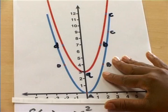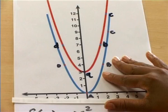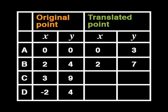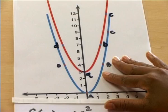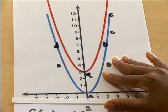And let's see what the new coordinates of those points are. Taborho, please record the new coordinates in your table as Cindy reads them off the graph. I've moved the transparency. And now, point A, which is zero and zero, is now zero and three. Point B, which is two and four, is now two and seven. Point C, which is three and nine, is now three and twelve. And finally, point D, which is minus two and four, is now minus two and seven.